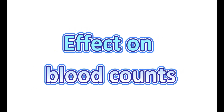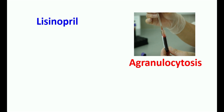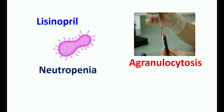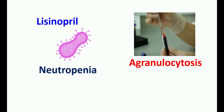Lisinopril can affect your blood counts and produce a condition called agranulocytosis — a hematological disorder that results in low counts of WBCs. This agranulocytosis can lead to neutropenia, decreased neutrophil count, and with the development of neutropenia, people may have an increased risk of infections. However, this adverse effect is rare and can be restored after stopping this medication.